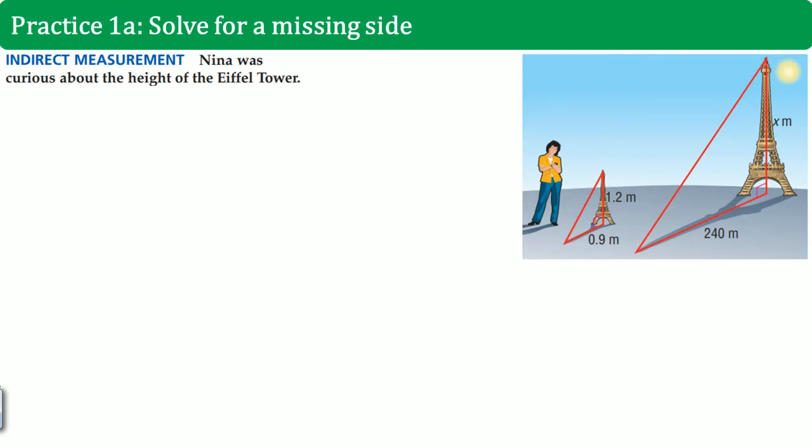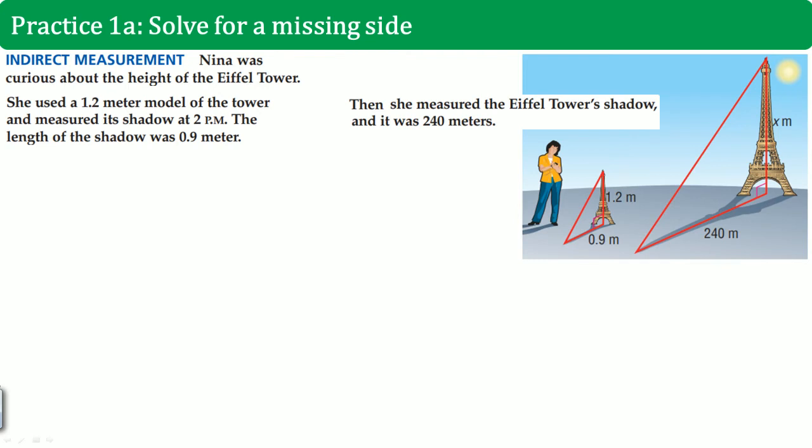Let's look at the first example problem. Nina was curious about the height of the Eiffel Tower. That's why it's here as X in meters. She uses a 1.2 meter model of the tower and measures its shadow at 2 p.m. The length of the shadow is 0.9 meters. Then, she measures the Eiffel Tower shadow and it was 240 meters. What is the height of the Eiffel Tower?